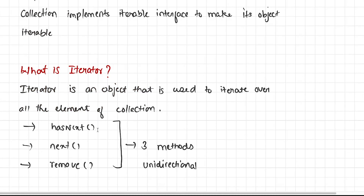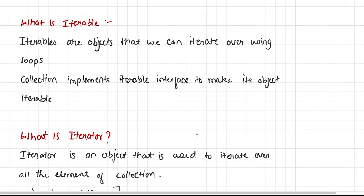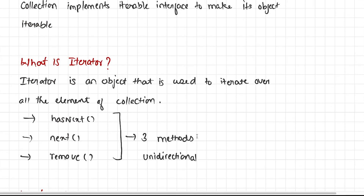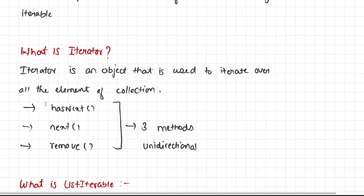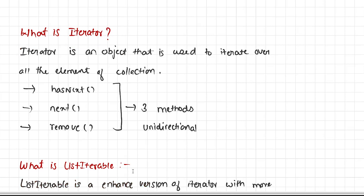What is iterator? Iterator is an object used to iterate over all the elements of a collection. Using the iterable interface we make the elements of collection iterable, and then we need some mechanism to actually traverse them — that part is defined by the iterator interface. Iterator interface defines three methods: hasNext, next, and remove. Whichever collection implements iterator must provide implementations of all three. Iterator is unidirectional, meaning we can only move in the forward direction.